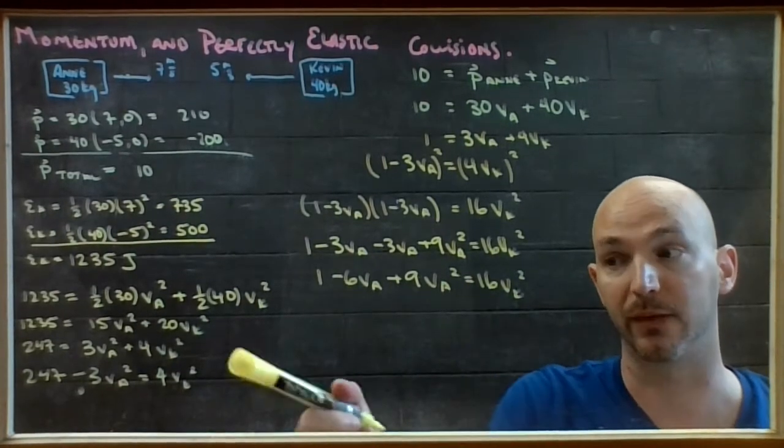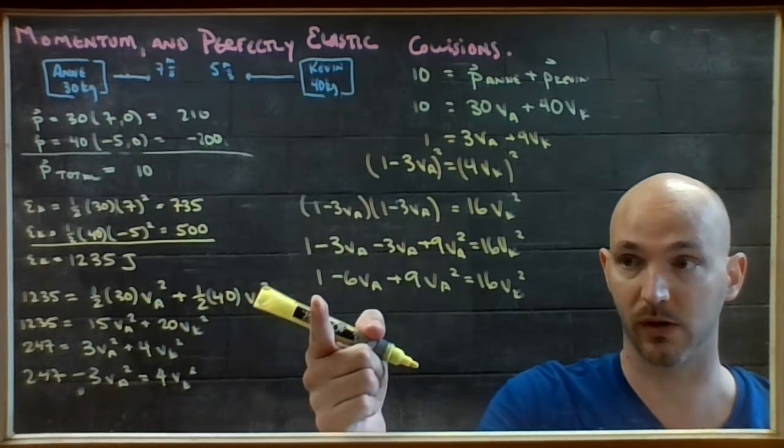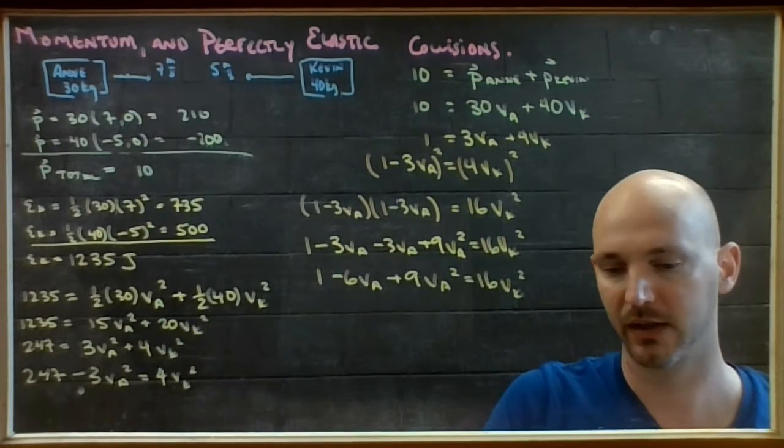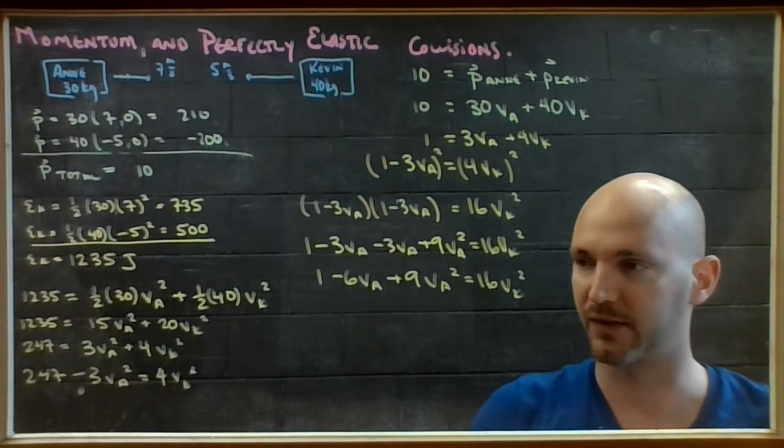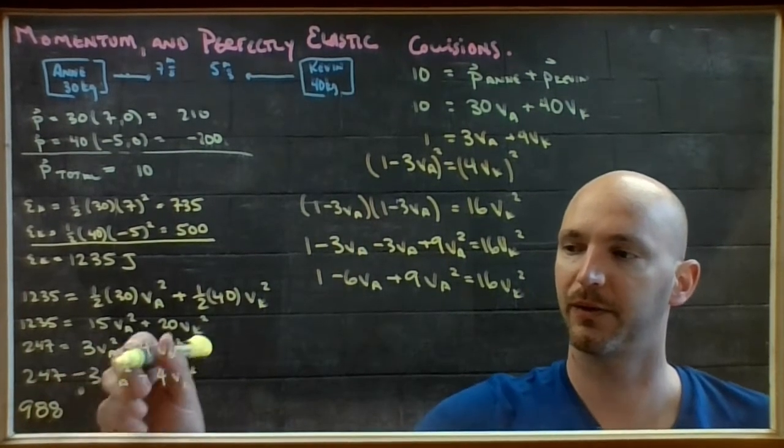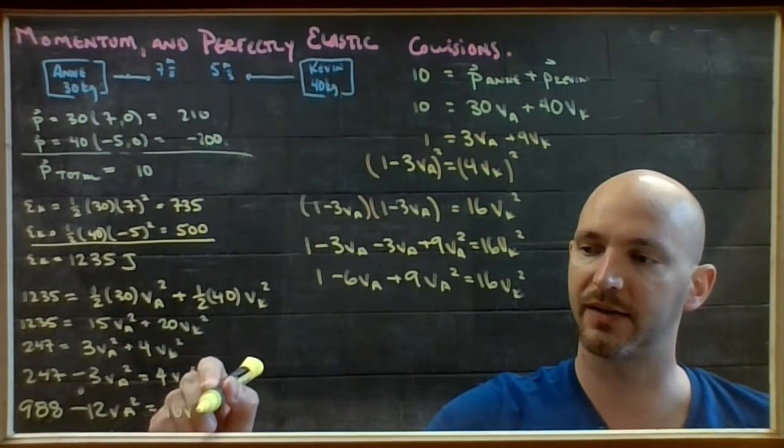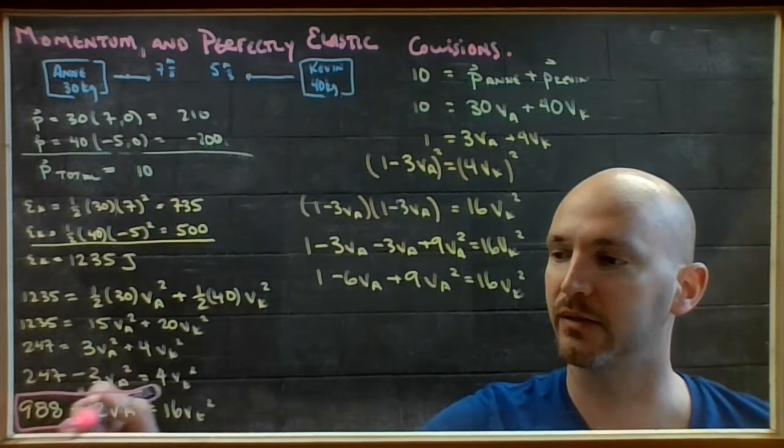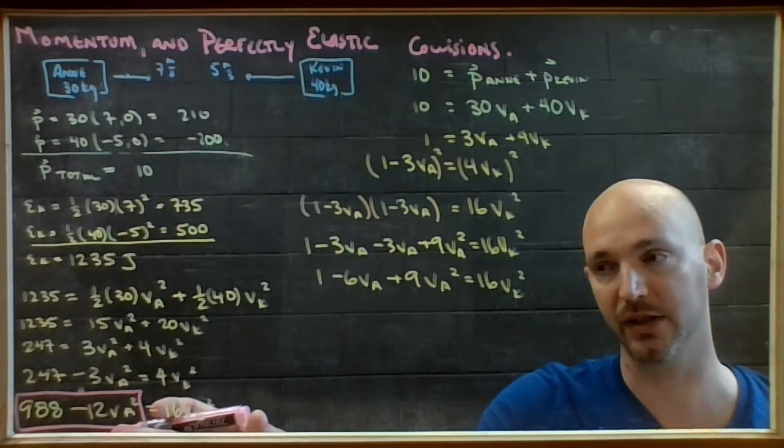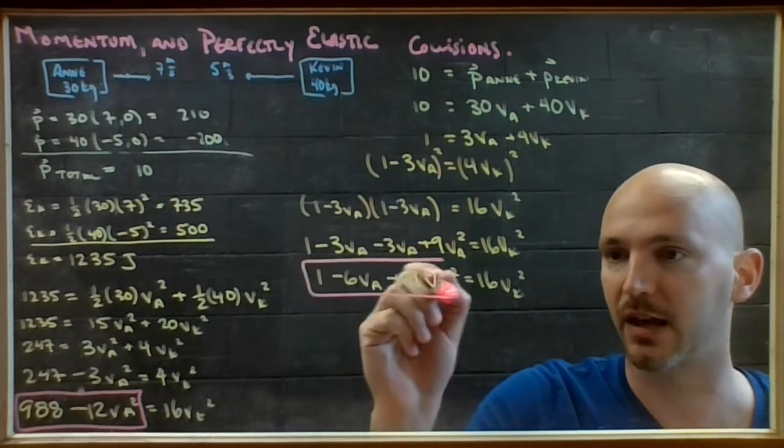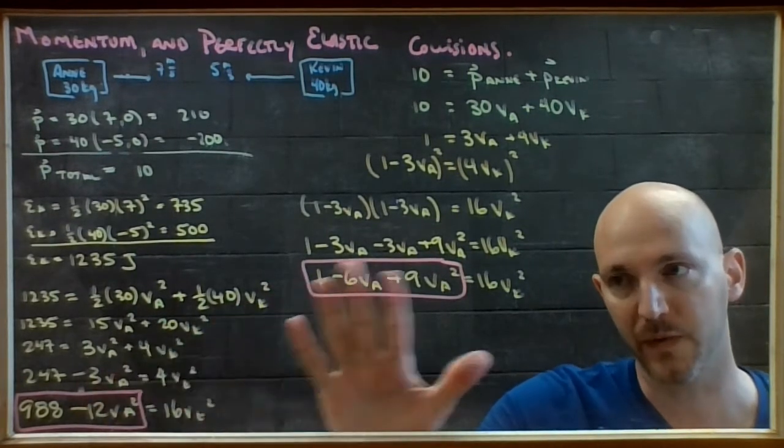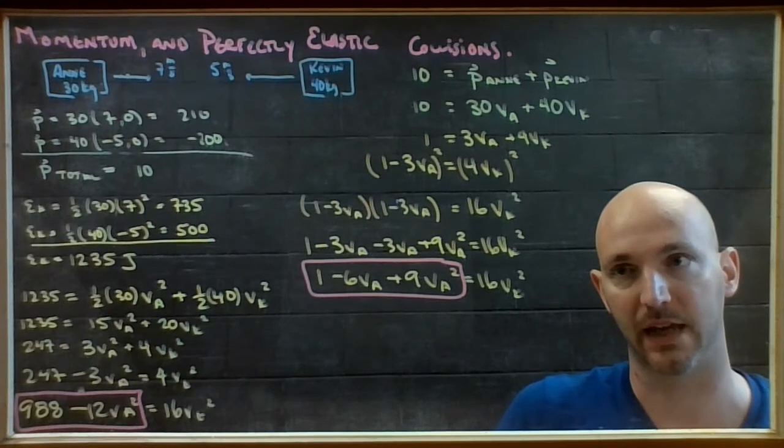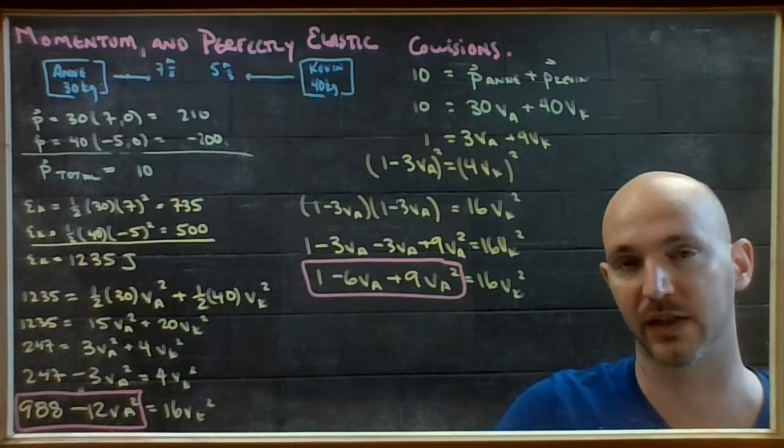If I collapse that, I get 1 minus 6va plus 9va squared equals 16vk squared. Now I didn't want 16, I wanted 4. So I have a choice: I could either divide this line by 4, which would give me a bunch of decimals, or I could multiply this by 4, which would not give me decimals. So I'm going to choose that one. 247 times 4 gives me 988, 3 times 4 is 12. Now I have 16vk squared. What I have accomplished is an expression for 16vk squared that I built entirely from kinetic energy, and an equation for 16vk squared that I built entirely from momentum. If both of these things have to be true after the collision, then I'm going to set this equal to that and solve for my va.